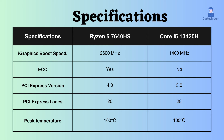The Ryzen 7640HS supports ECC, whereas Intel does not, making the Ryzen suitable for critical systems. The Intel i5-13420H supports PCI version 5, while the Ryzen 7640HS only supports PCI version 4. Moreover, the number of PCI lanes supported by Intel is greater than that supported by Ryzen. This enables high-speed PCI devices, resulting in improved data transfer rates, increased bandwidth, and greater flexibility for connecting high-performance devices.